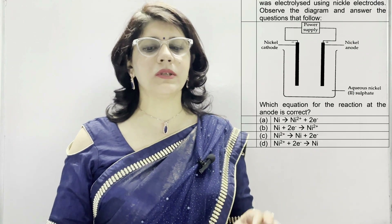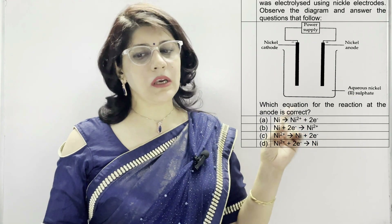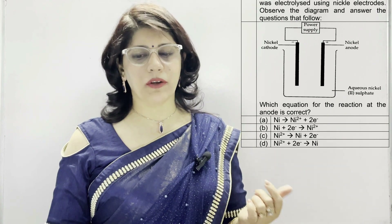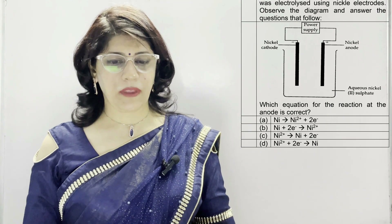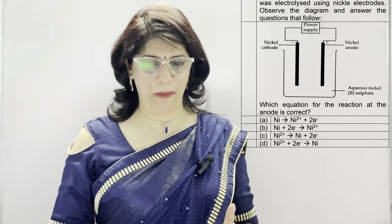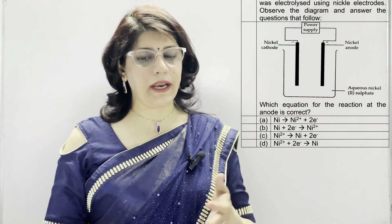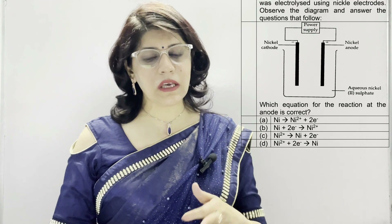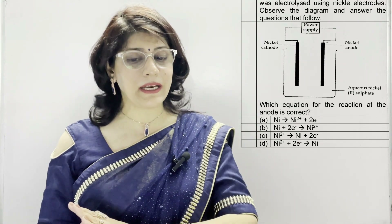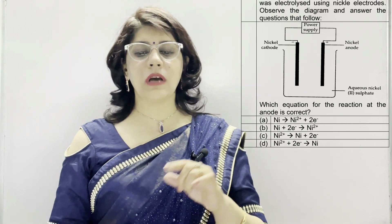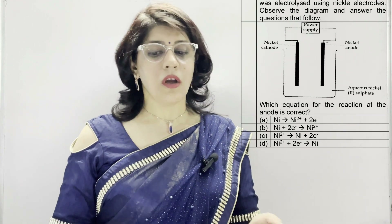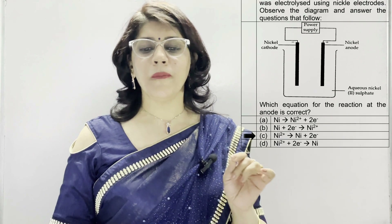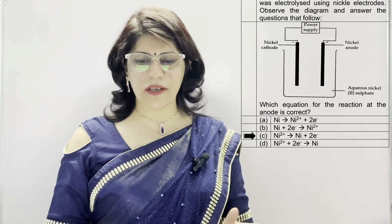In question number 38: an aqueous solution of nickel(II) sulfate was electrolyzed using nickel electrodes. Which equation for the reaction at the anode is correct? At the anode, oxidation should happen. Ni → Ni(2+) + 2e- means oxidation because electrons are written on the right-hand side. When electrons are on the left-hand side it is reduction; when on the right-hand side it is oxidation. So option C is correct — showing oxidation at the anode.